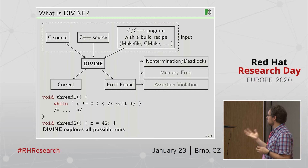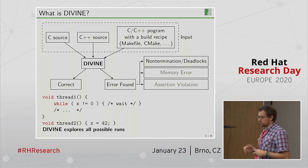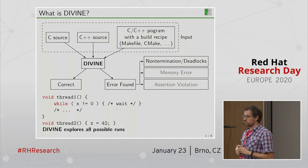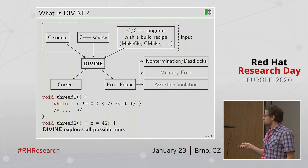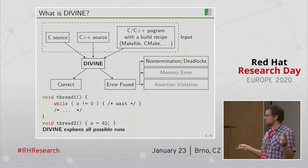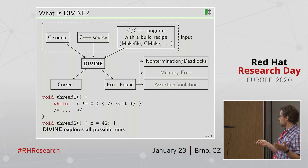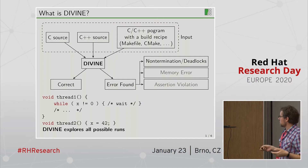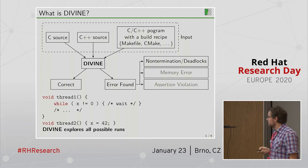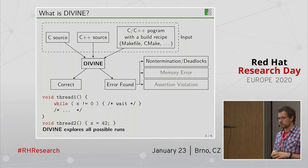Another kind of thing Divine can detect, which is quite a new one, is that it can detect deadlocks in parallel programs or cases when parallel programs do not terminate. So let's say you have a parallel program that runs two threads. One thread is waiting while x is not equal to zero, and the other thread running in parallel sets x to 42. If there is a problem and this program can loop, then Divine will say that the program does not terminate.